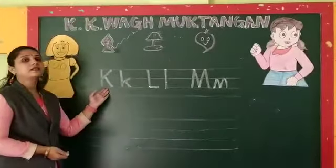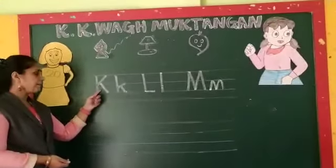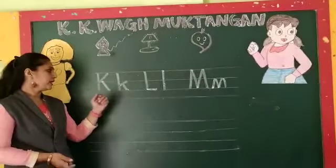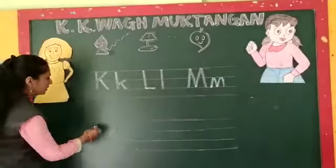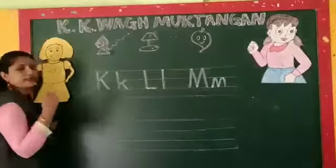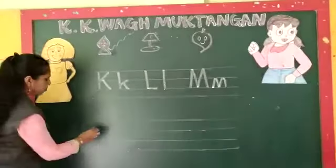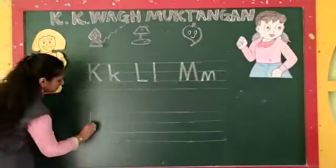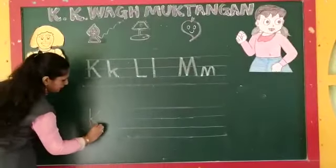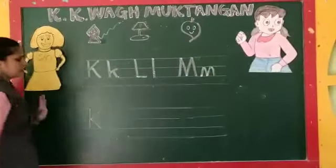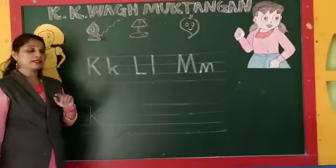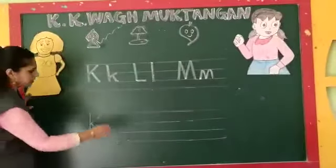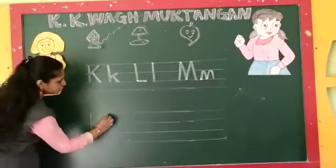This is K — capital K and small k. So you know how to write capital letters. We will write capital K. What is the sound of K? K says K, K, K.